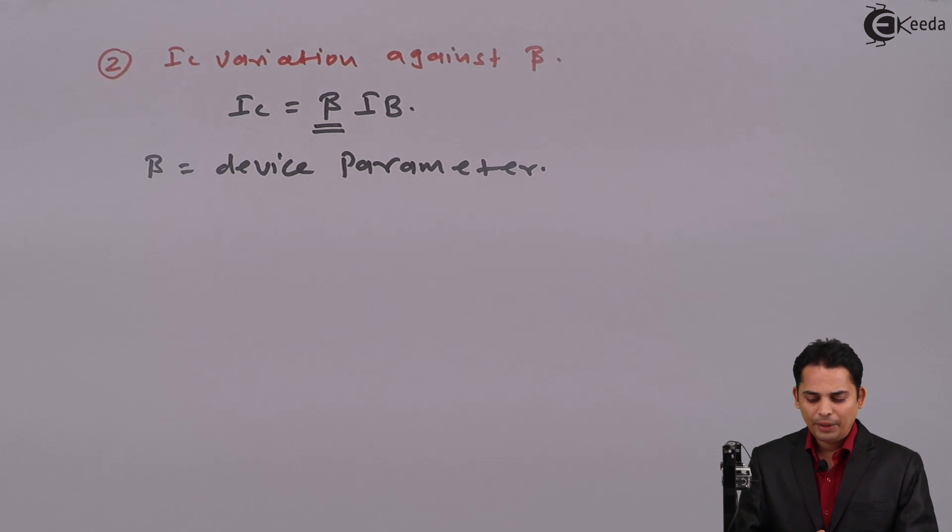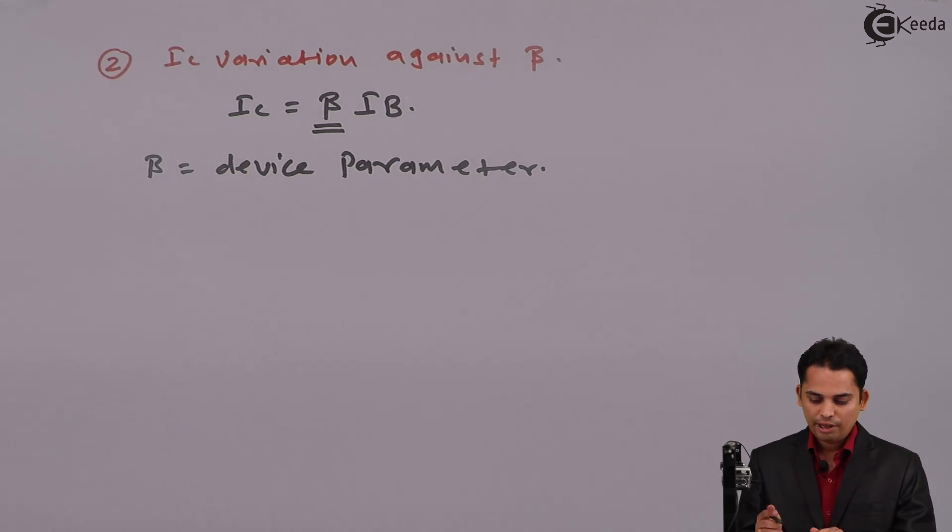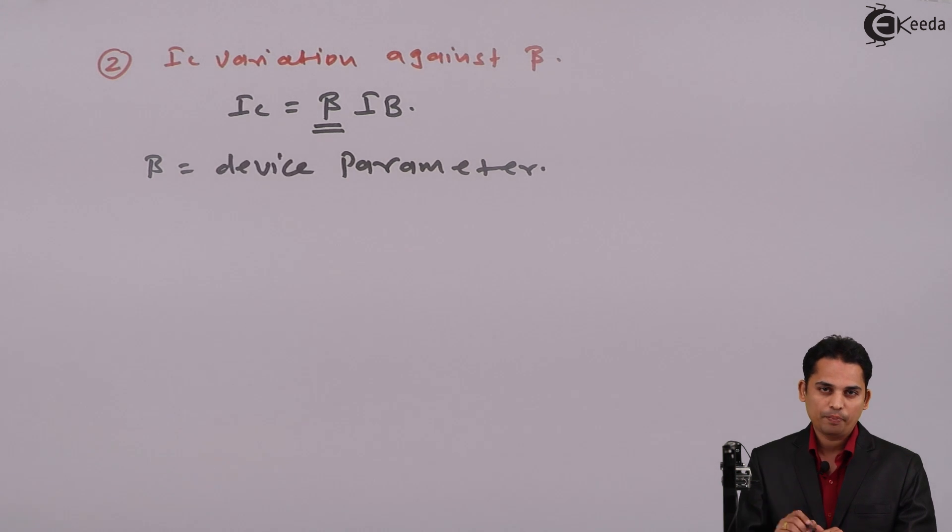Hence, if we change the device, beta will change. And hence, IC will change. Whenever we are going to change a particular transistor, a transistor is replaced by another transistor. In that particular case, value of beta will be different. And hence, value of IC will change. This is the second reason why we need to bias BJT. So throughout designing, we must keep same transistor so that variation of IC against beta can be controlled.